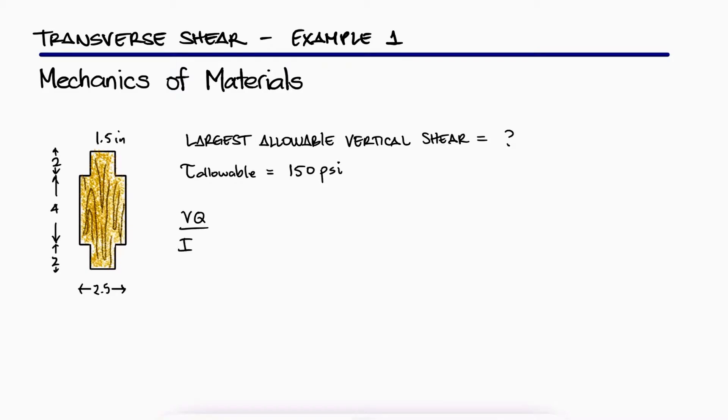If the transverse shear stress should not exceed 150 psi, we have an expression to solve for the shear force V. Since it's not obvious where the maximum shearing stress occurs, we will consider two locations: at the neutral axis and where the width changes.